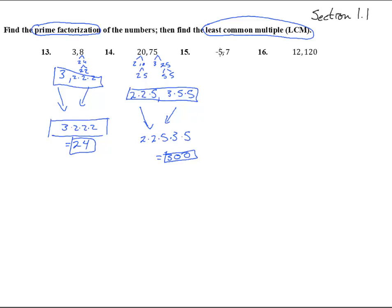Hey, number 15. 5, that one doesn't break down, so there's the prime factorization of 5, and there's the prime factorization of 7. Least common multiple, we need a 5 and we need 7 to go into it, so that's 35.